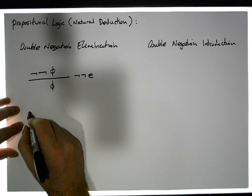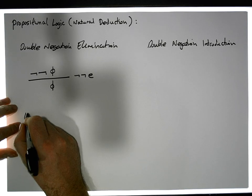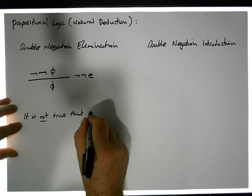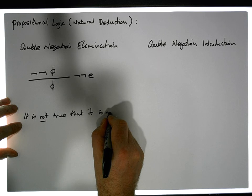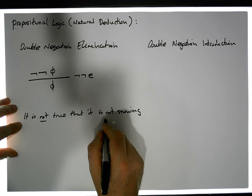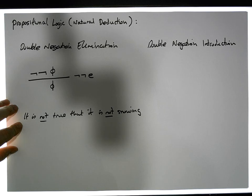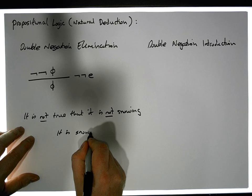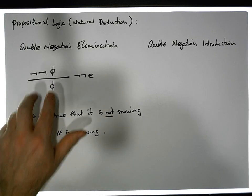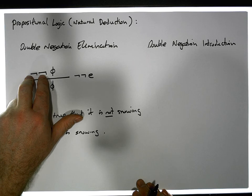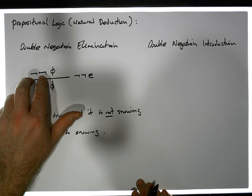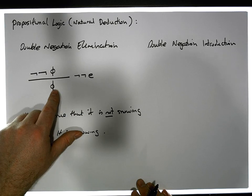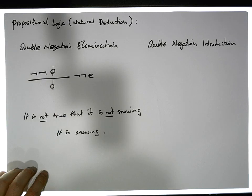For example, if it is not true that it is not snowing, then it is snowing. So if we double negate an expression or formula, we can eliminate the double negation. That's a particular rule in this natural deduction system.